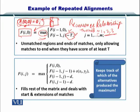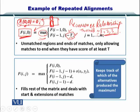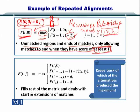Using this t from amongst these values or more, you can initialize f(i,0), which means you can initialize the first column. Essentially, unmatched regions and ends of matches will be filtered out, only allowing matches to end where they have a score of at least t or bigger than t.